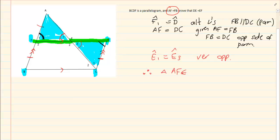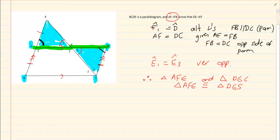What can you tell me about E1 and E3? They are equal because they are vertically opposite. Therefore, the triangle AFE and the triangle DEC are congruent. These two triangles are congruent. Why are they congruent? Because I got an angle angle side.